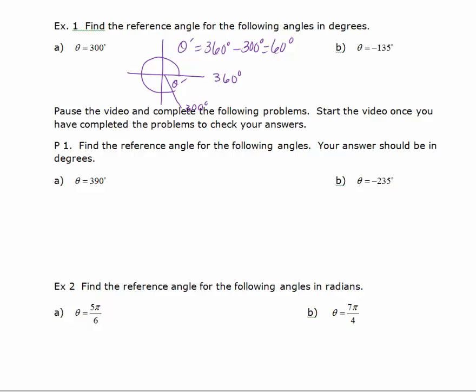Now let's look at theta equals negative 135 degrees. Negative 135 is short of negative 180. I'm looking for the little acute angle made when I drop a perpendicular. You could think about how many more degrees you'd need to go to reach negative 180 rotating clockwise from 135 degrees, in which case theta prime would equal 45 degrees.